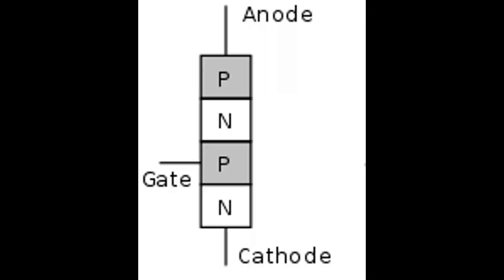The anode is the outer P-layer and cathode is the opposite N-layer, and gate is at the end of P-layer near the outer N-layer.